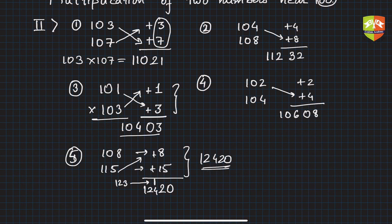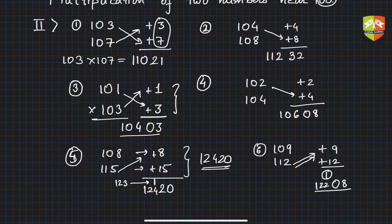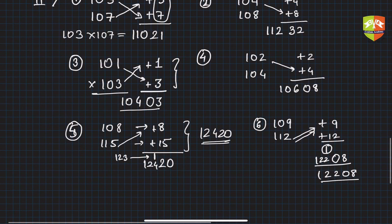Another example: 109 and 112. Plus 9 and plus 12 away from 100. 12 times 9 is 108, so write only 08 with a carry. Then 112 plus 9 is 121, plus the carry 1 is 122. The product is 12208.